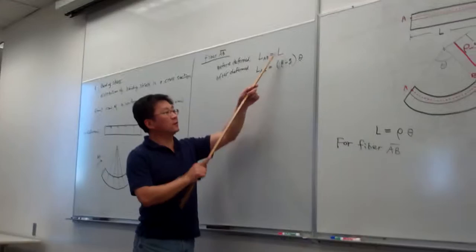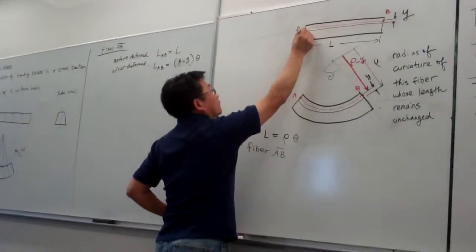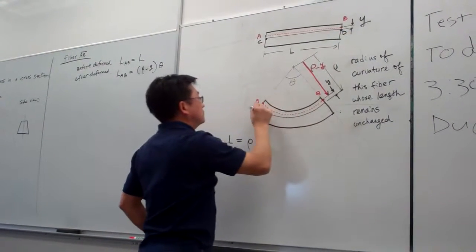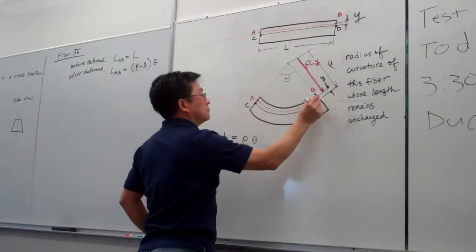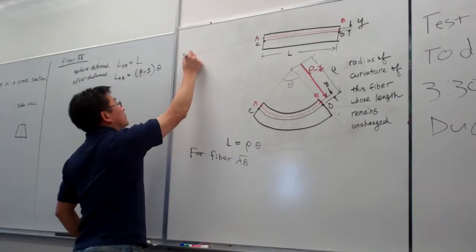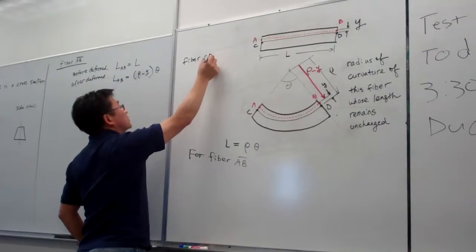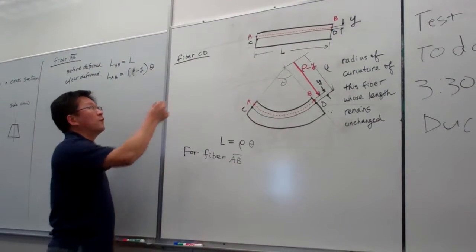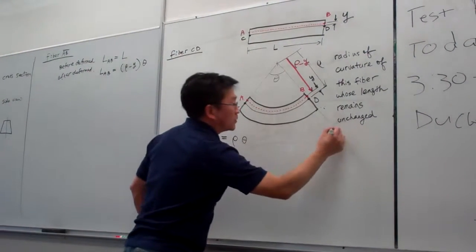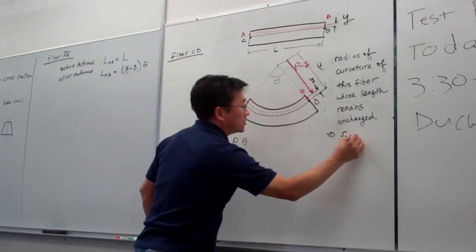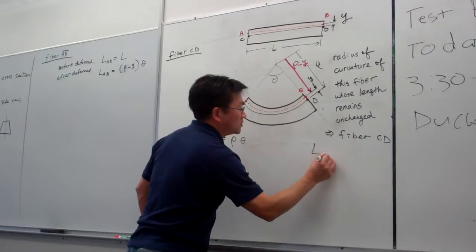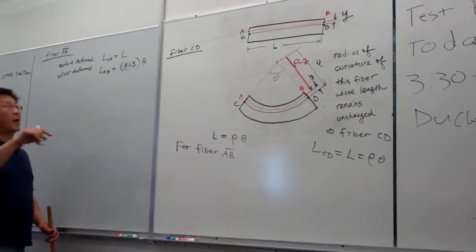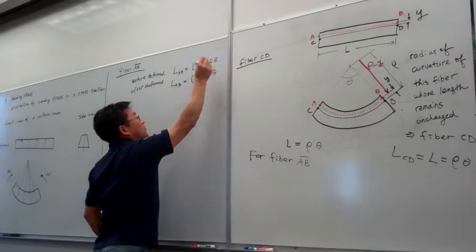What is L? Fiber CD is the specific one — meaning before and after deformation, fiber CD is unchanged in length. So fiber CD has length equal to L, which equals ρ times θ.